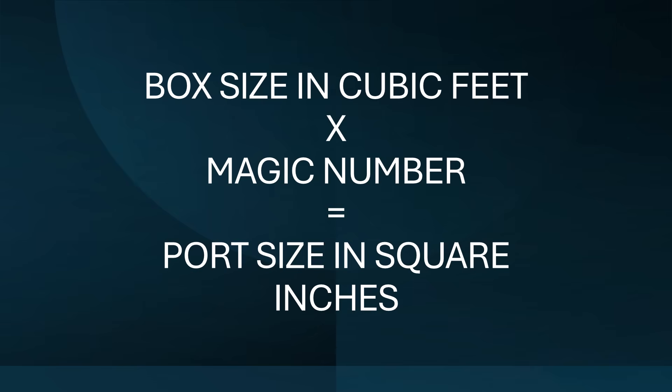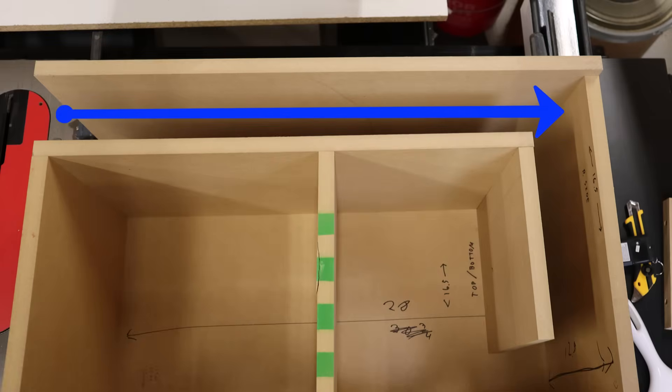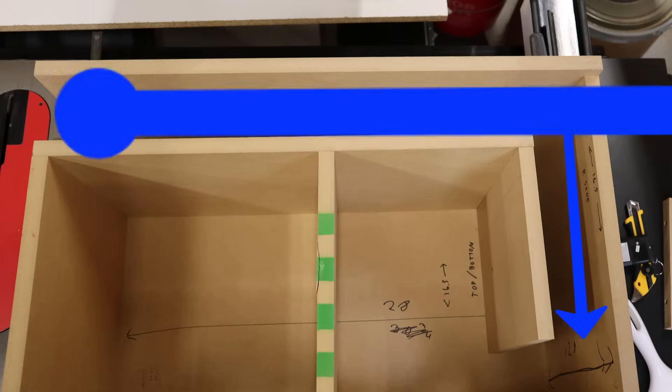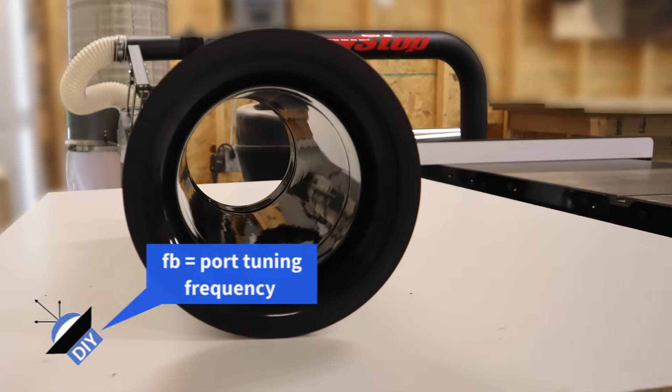I've been digging into it a bit and I think I know what's going on, so I'm going to show you how I design ports. That starts with understanding the goal, which is a port that will not degrade the sound quality. When you build a ported enclosure, you tune that port to a specific frequency. This is called the box frequency, or FB.